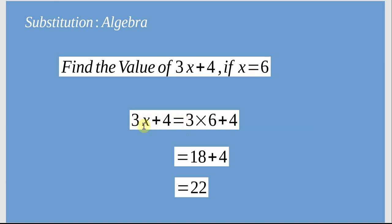The times is not written here, but it's 3 times x. So we have 3 times 6 and then we have plus 4. So now 3 times 6 is equal to 18 plus 4, which gives us 22.